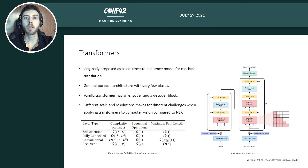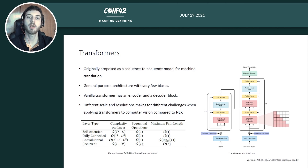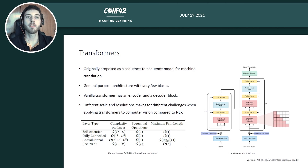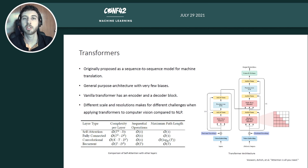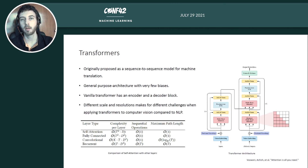Now we will discuss transformers. The transformer was originally proposed as a sequence-to-sequence model for machine translation, and it is now a standard in natural language processing, but has also found its way into computer vision and other tasks. It's a very general-purpose architecture that lacks the inductive biases of CNNs — like locality and translation invariance — but given large enough data, it can learn these from data and perform on par with or even surpass CNNs.